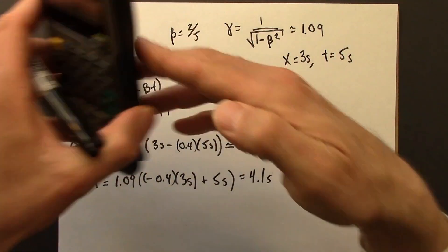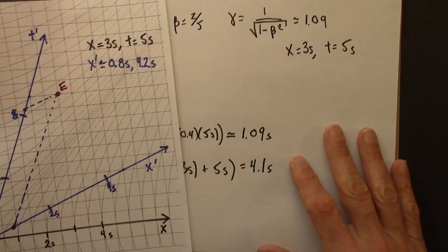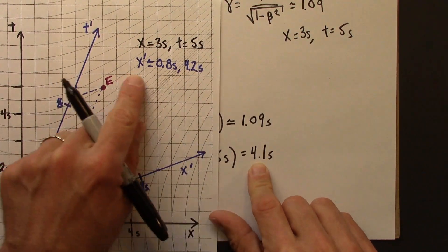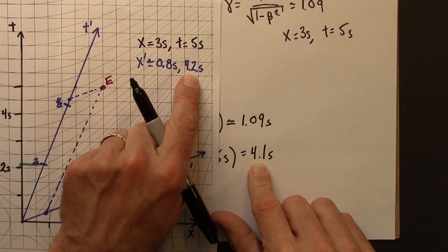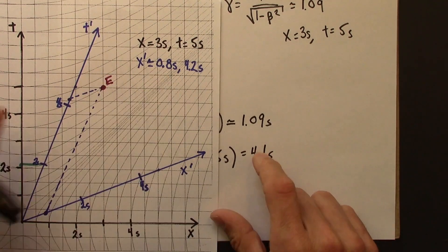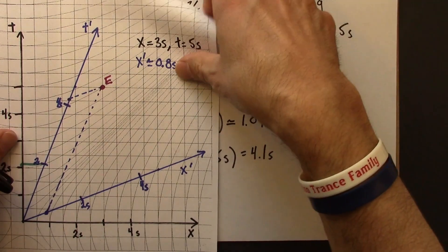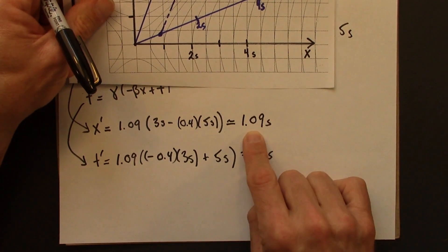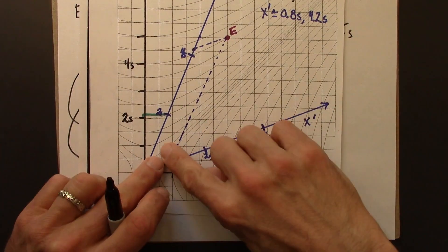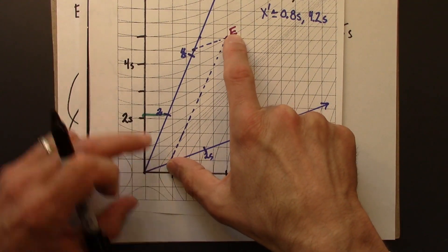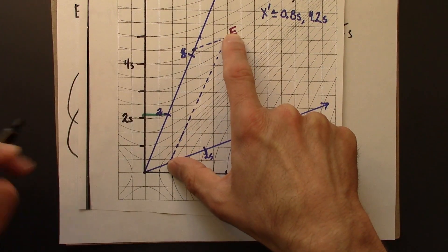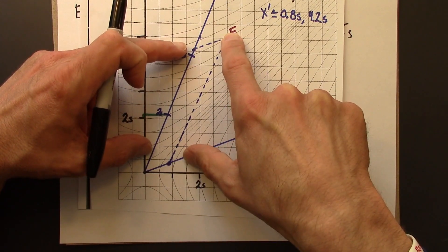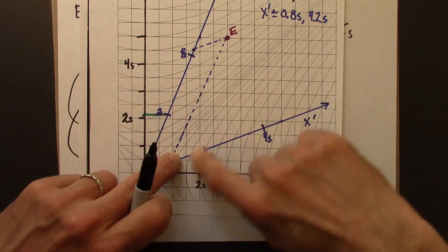So we got pretty similar numbers here. Our estimate was pretty good for t prime. And for x prime we had 0.8, that's the number that we estimated here, and apparently the exact number is 1.09. So it looks to me like, yeah, I can kind of see it when I drew this. This dashed line isn't quite parallel to the solid line. Probably should have moved it over that way a little bit to the right, which would have given a slightly larger value for x prime.